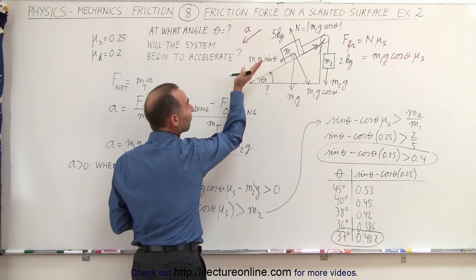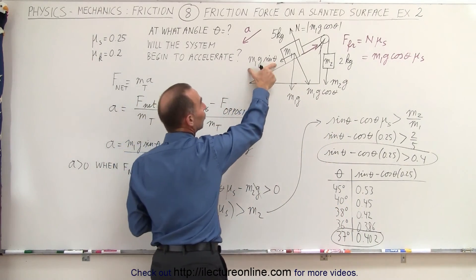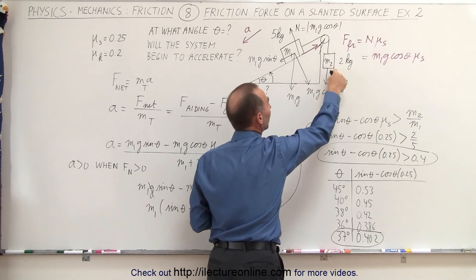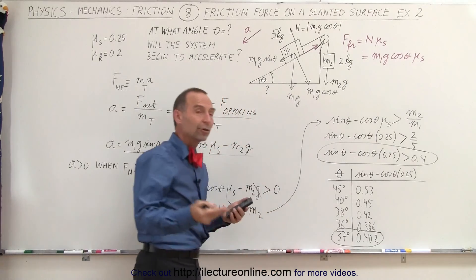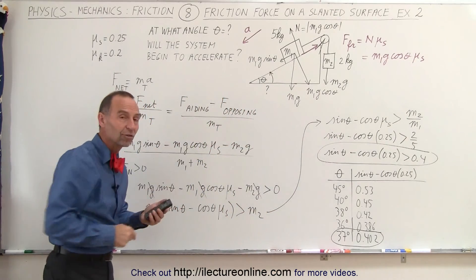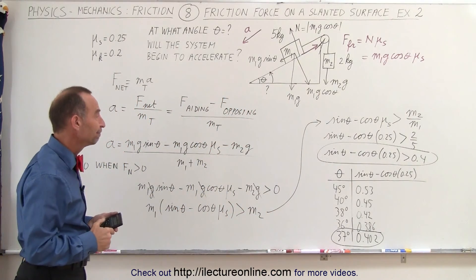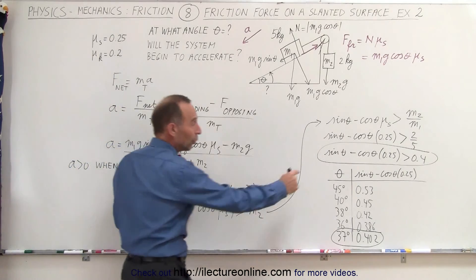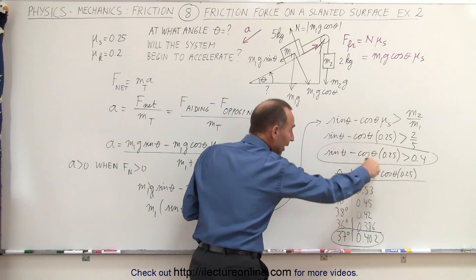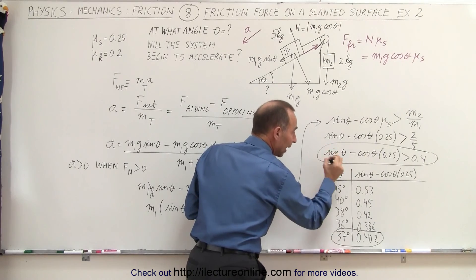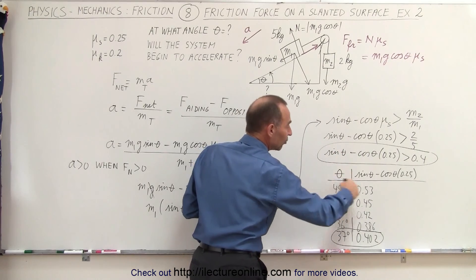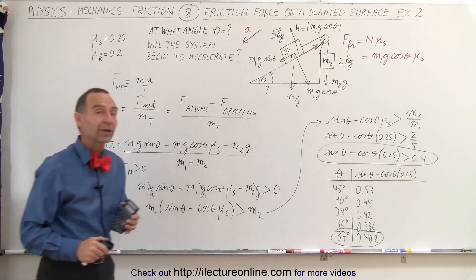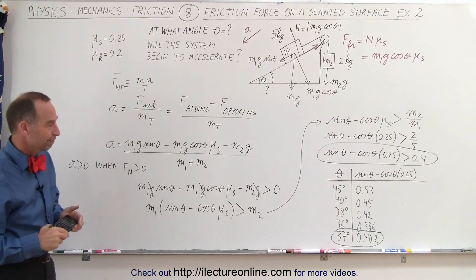So the solution is approximately 37 degrees. When the angle reaches 37 degrees, the driving force becomes large enough to overcome both the friction force and the weight of block 2, and the whole system begins to accelerate. Even though we can't algebraically narrow down to a single value, we can use a table of values to experiment and zero in on the correct answer — and that's how it's done.